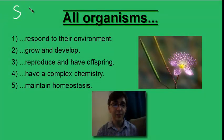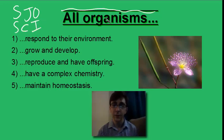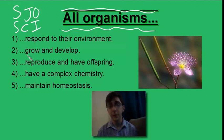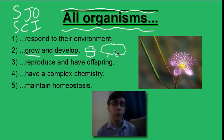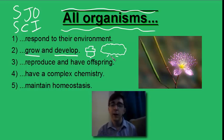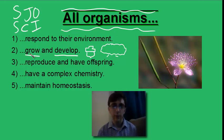Hi there, this is SJ Owen Science, and yes, we're still talking about those things that all organisms do. Last time we saw that all organisms grow and develop. We started with a young acorn and watched it grow into a full-sized oak tree. When it became a full-sized adult oak tree, it was capable of making more acorns, which then became trees and produced more acorns of their own — a reproductive cycle. All organisms reproduce and have offspring.